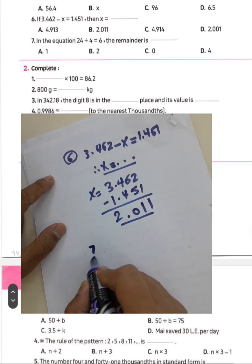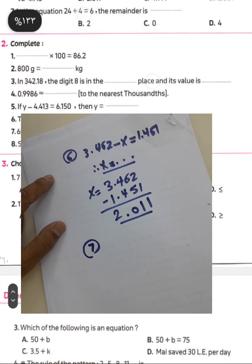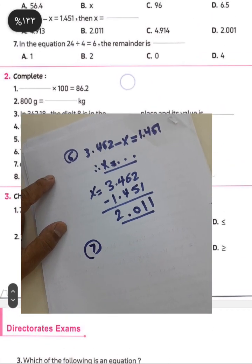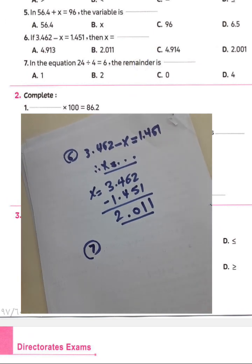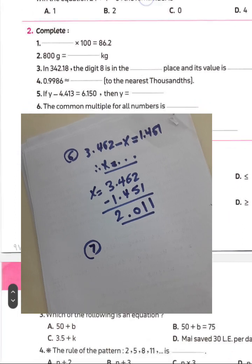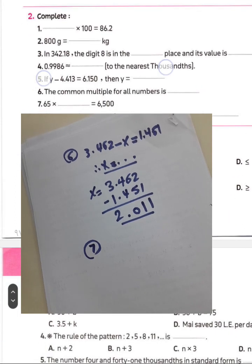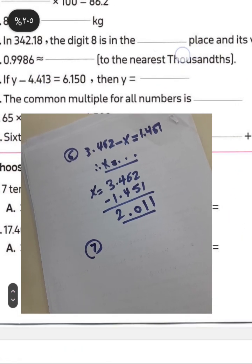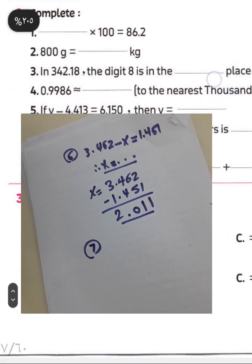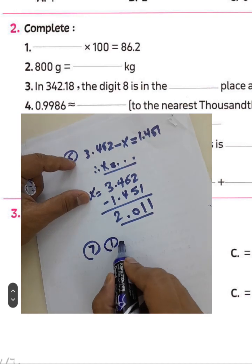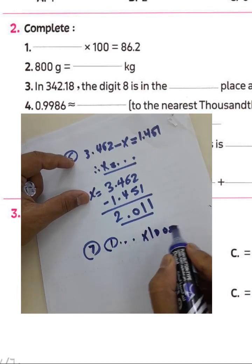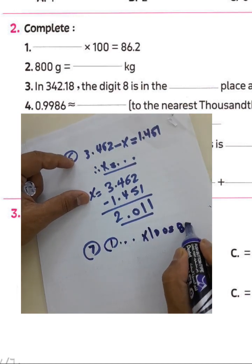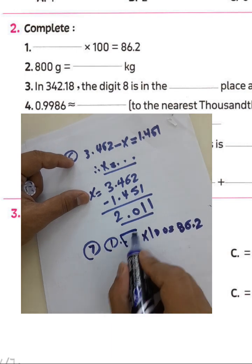Question number seven: in the equation 24 divided by 4 equals 6, the remainder equals 0 because 4 times 6 equals 24. Complete question number one: what times 100 equals 86.2? To find this number you must divide 86.2 by 100.